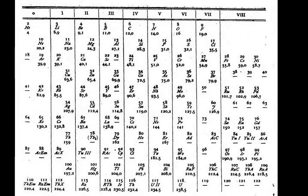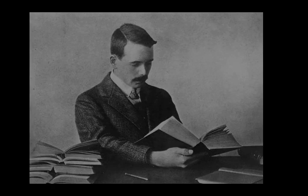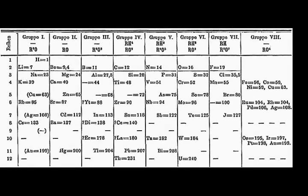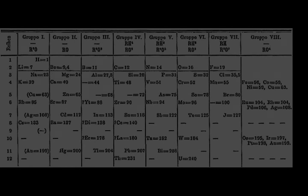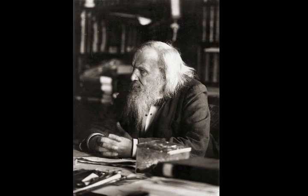The 32-column form has the advantage of showing all elements in their correct sequence, but requires more space. All periodic tables show the element symbols; many also provide supplementary information either via color coding or as data in the cells. The above table shows the names and atomic numbers of the elements, and also their blocks, natural occurrences, and standard atomic weights. For short-lived elements without standard atomic weights, the mass number of the most stable known isotope is used instead. Other tables may include properties such as state of matter, melting and boiling points, and densities.